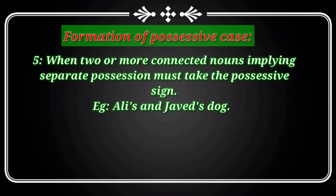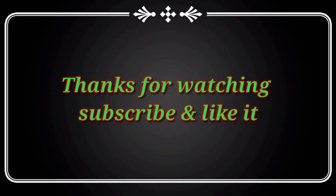So to summarize: if one dog is shared between two people, add apostrophe S only to the last name. If each person has their own dog, then both names take apostrophe S. If you like my lectures, please share and subscribe. Thank you.